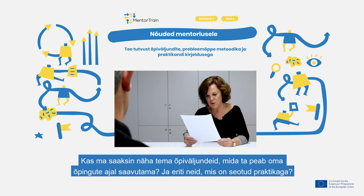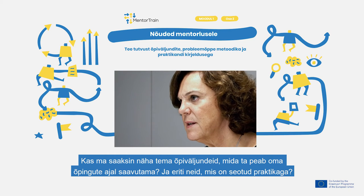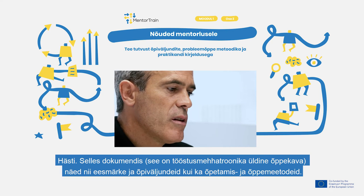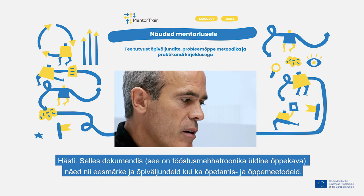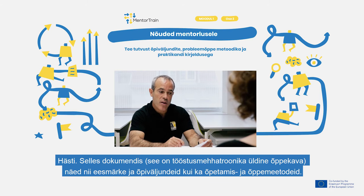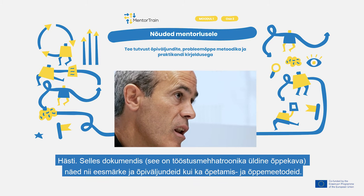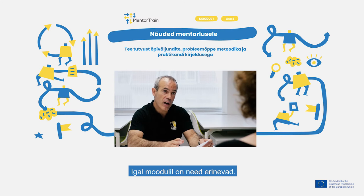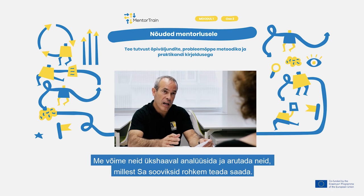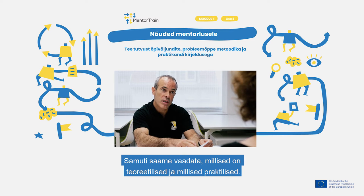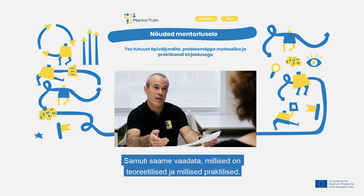Could I check the learning outcomes he has to achieve during his studies, and especially those related to the apprenticeships? In this document — the general curricular design of industrial mechatronics — you can see the objectives and the learning outcomes as well as the teaching and learning methods. Every module has its own ones and we can analyze them one by one and discuss those you would like to know better. We can also see which ones are theoretical and which ones are practical.